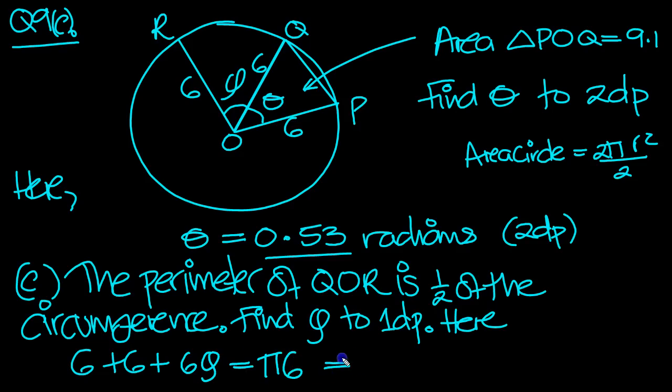So we can divide by 6. All the way through here we've got two 6s, so that's 2 plus phi equals pi, and that tells us that phi equals pi minus 2.